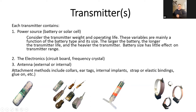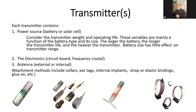Pit tags are small implantable transmitters — when you run a receiver over them, they'll relay a number associated with the marked animal. They're used in fish and by veterinarians on dogs to help reunite lost pets with owners. There are also adhesive transmitters that can be glued on, vaginal transmitters pushed out after an animal gives birth to record birth location, and of course various sizes and configurations of collar transmitters.